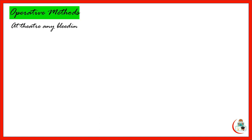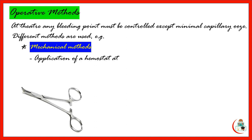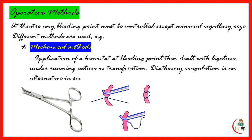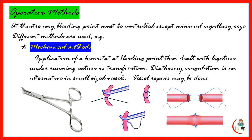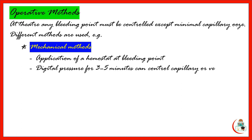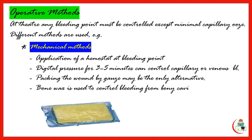Operative methods: in the theater, any bleeding point must be controlled except minimal capillary ooze. Different methods are used. Mechanical methods include application of a hemostat at the bleeding point, then the vessel is dealt with by ligature, under-running suture, or transfixation, depending on the size of the severed vessel. Thermocoagulation is an alternative for small-sized vessel injury. Vessel repair is justified in special situations. Digital pressure for three to five minutes can control capillary or venous bleeding. Packing the wound by gauze or dressing may be the only alternative to stop bleeding. Bone wax is used to control bleeding from bony cavities.